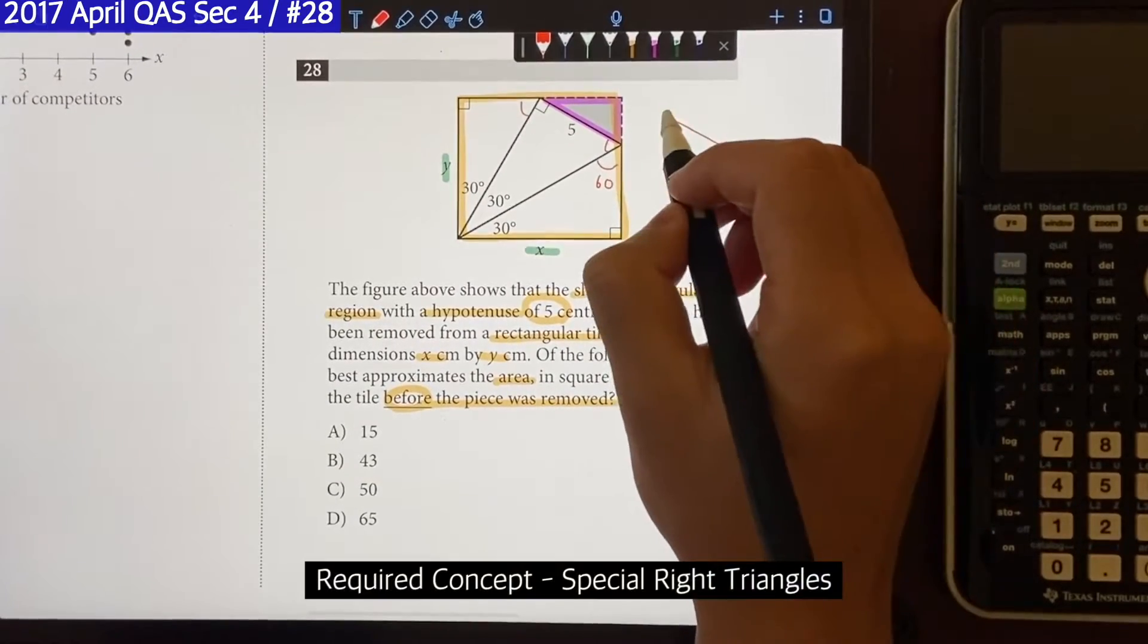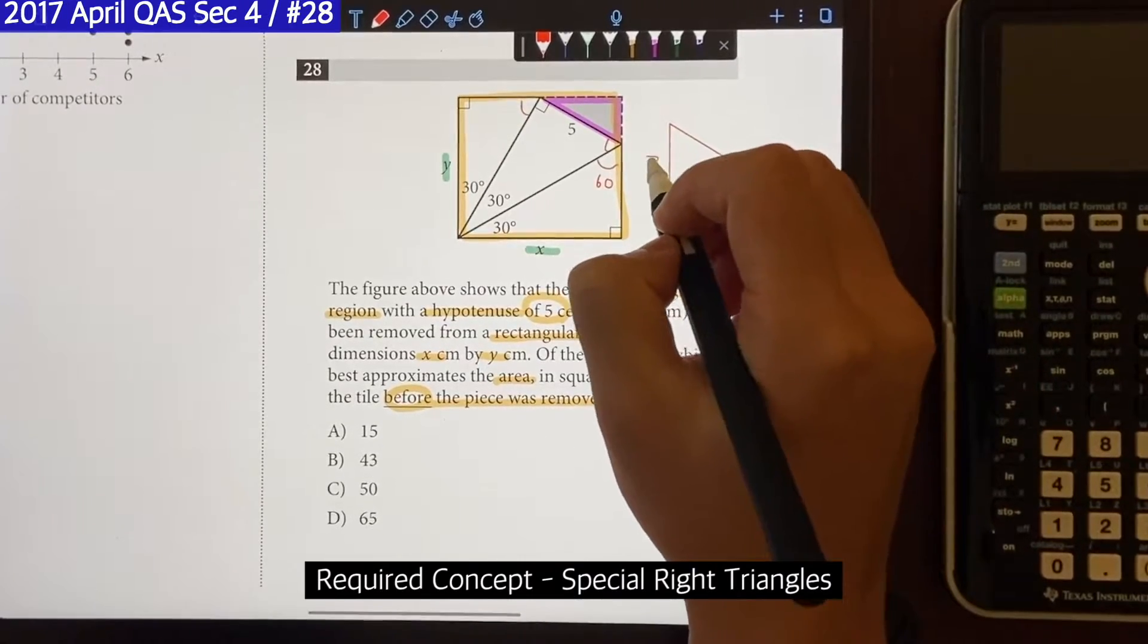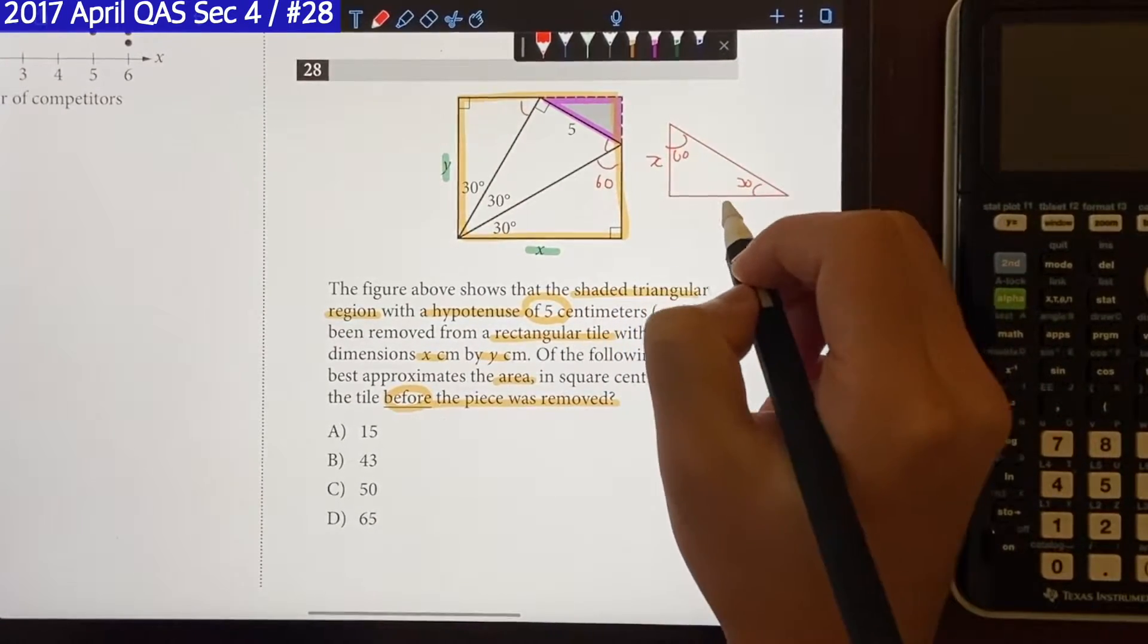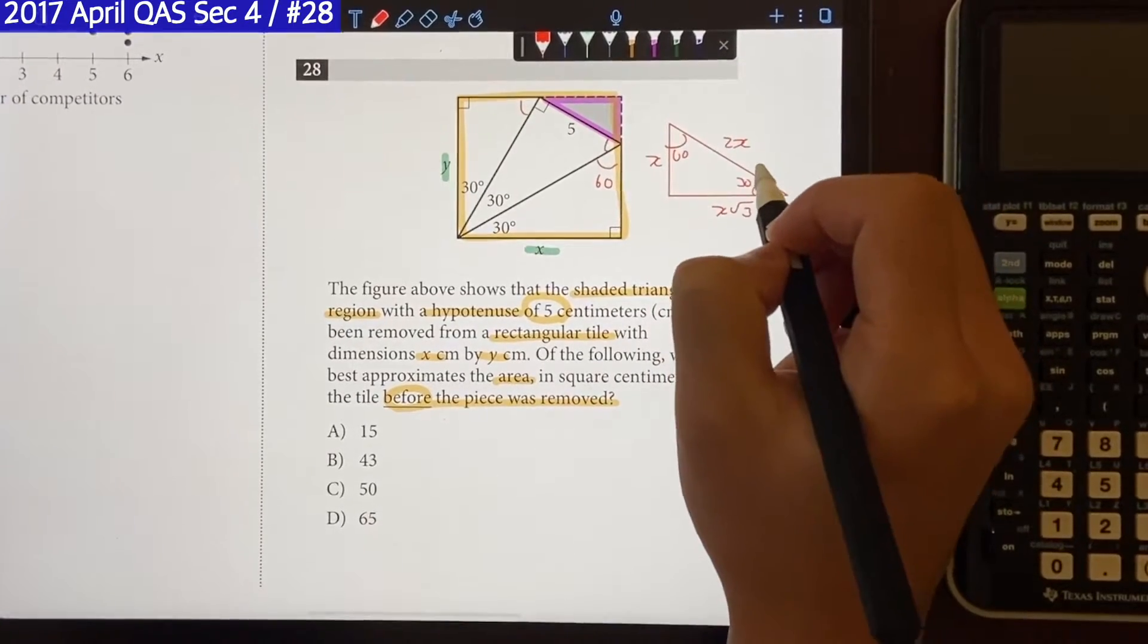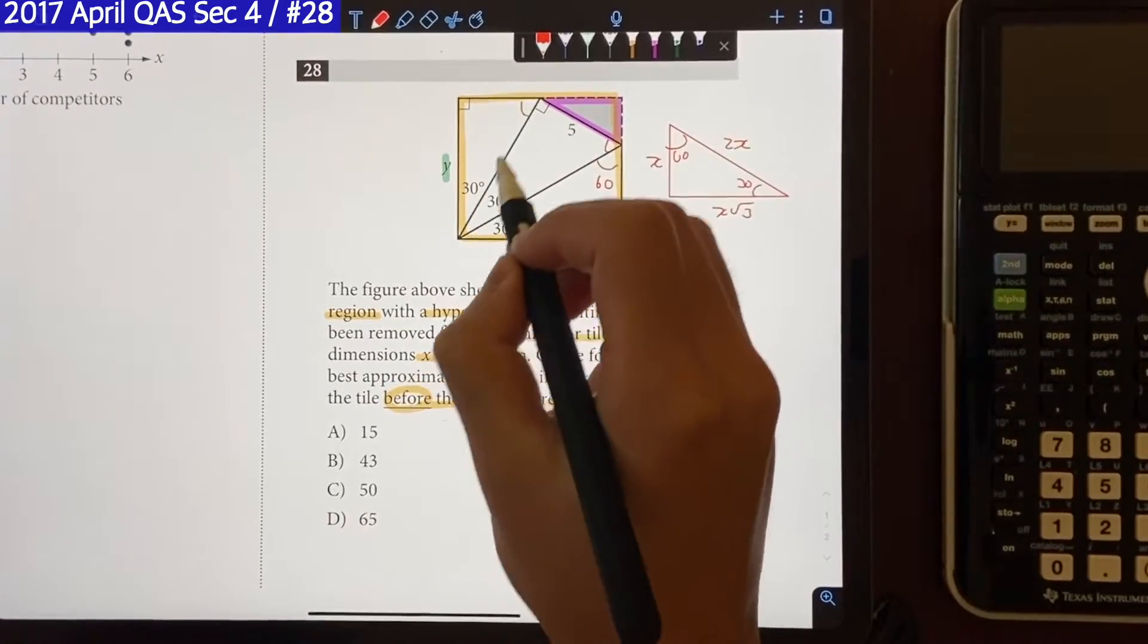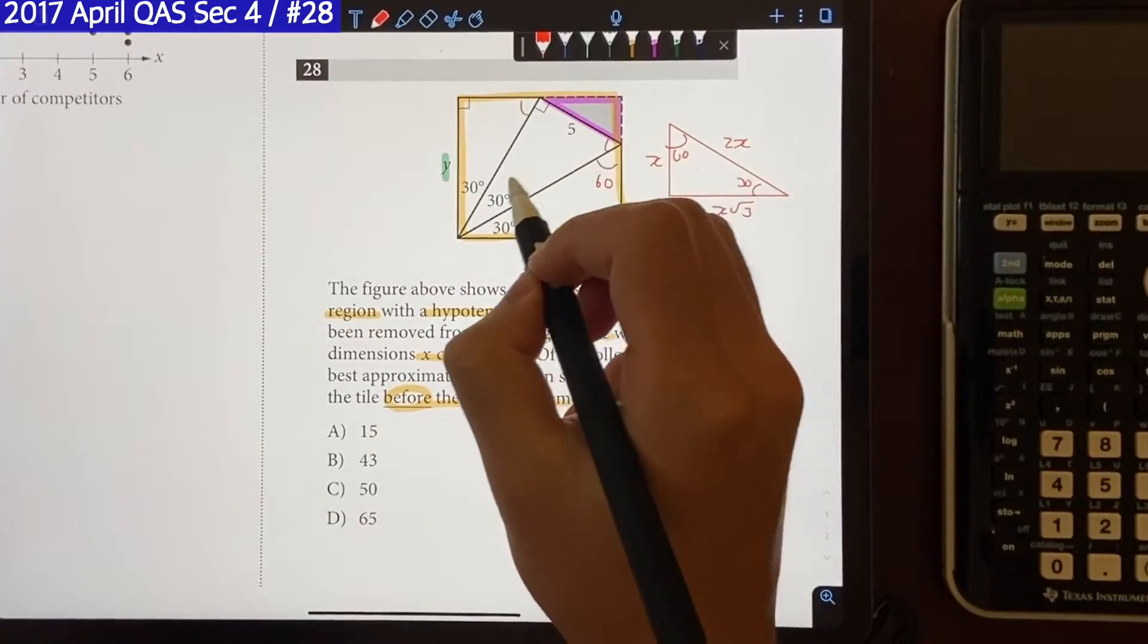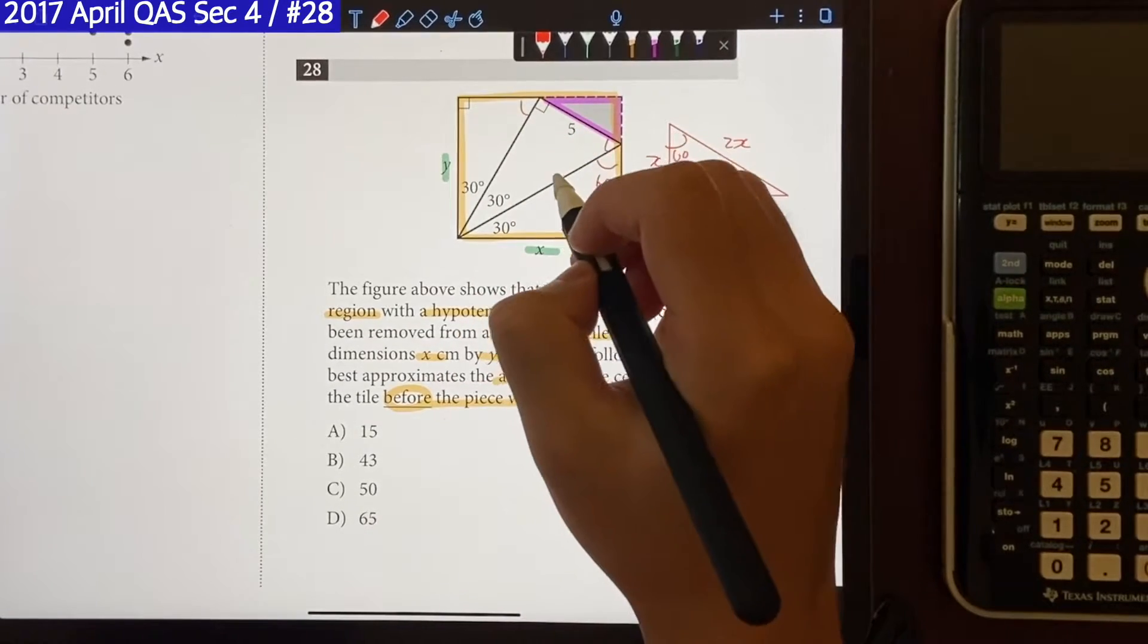And what we know about special right triangles is that it follows a special side length ratio. Side opposite from 30 will be x, opposite from 60 will be x√3, and opposite from 90 will be 2x. So using this ratio, we can find out the missing side length. So if looking at this middle triangle, if the side opposite from 30 is 5, that means opposite from 90 is going to be 10.